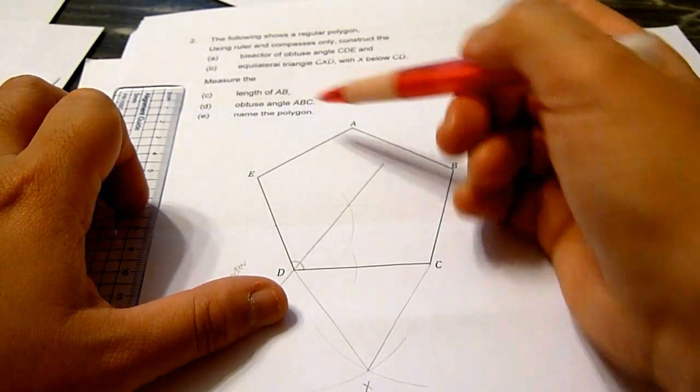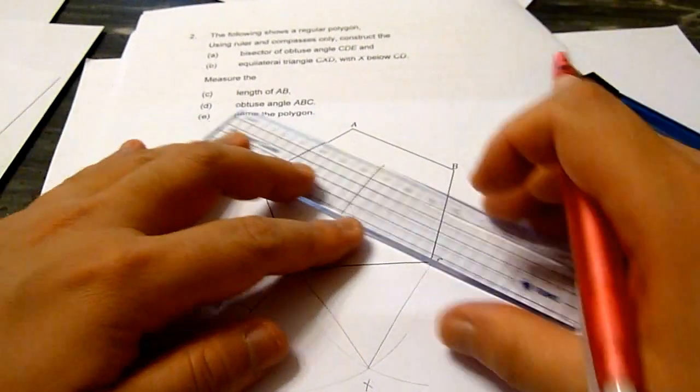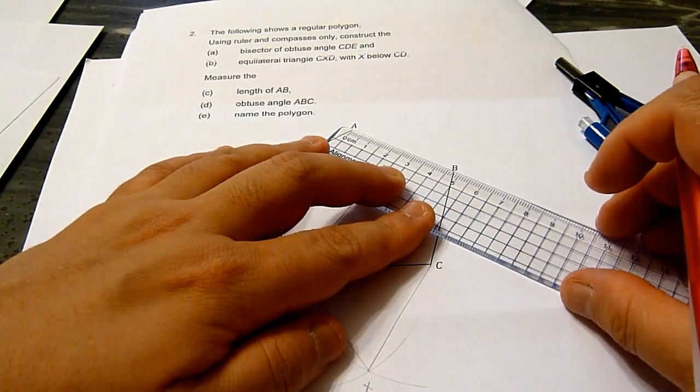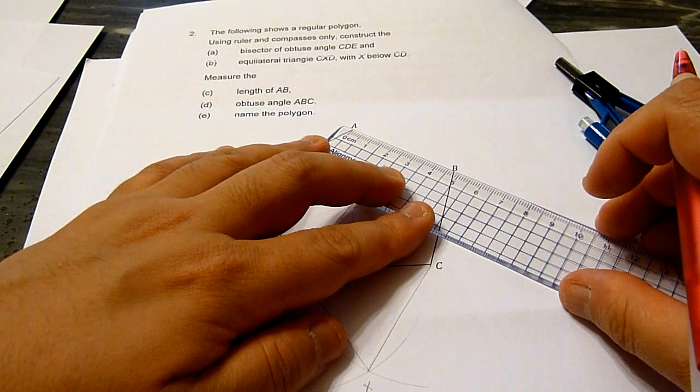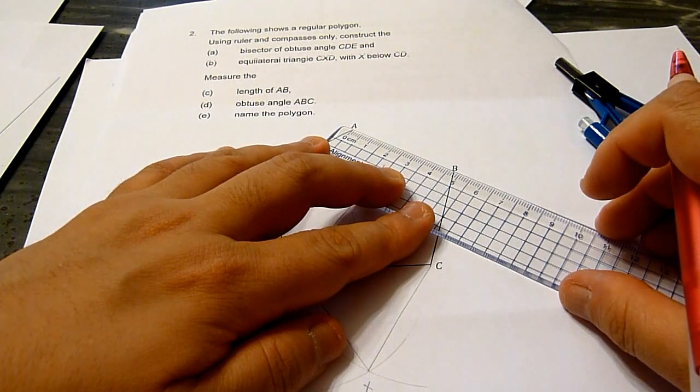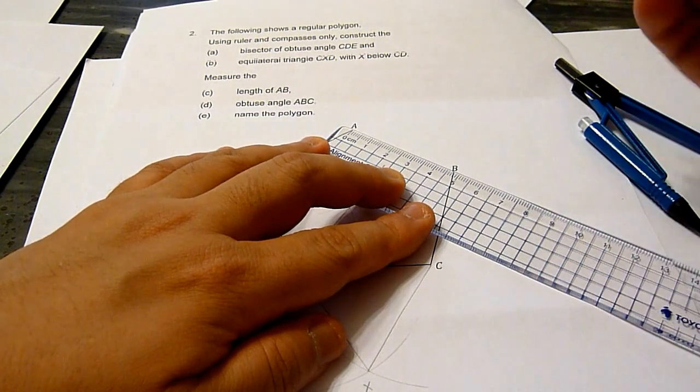Measure the length AB. Use a ruler to measure the length AB, and it should be 4.7.